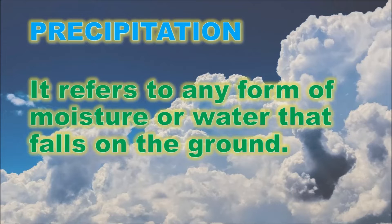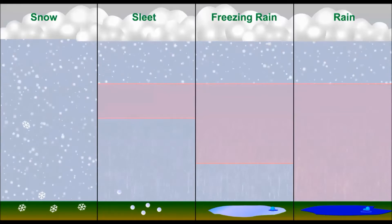Precipitation is any form of moisture including rain, drizzle, snow, freezing rain, hail, ice pellets, or sleet that falls on the ground. Precipitation usually forms when clouds reach a thickness of more than one kilometer. When droplets and crystals in clouds grow large and the clouds cannot hold them, they fall to the ground as precipitation.